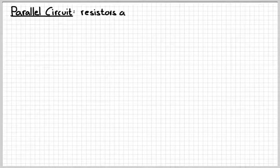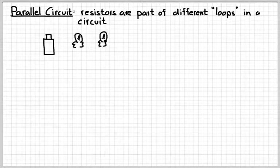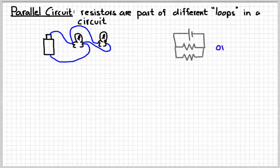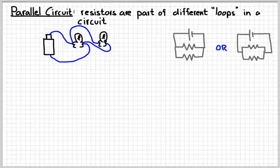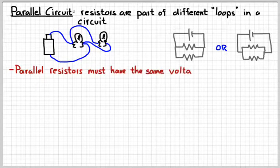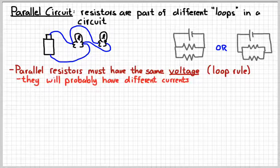Now the other way to add resistors into a circuit together is to make a parallel circuit. In a parallel circuit, resistors are parts of different loops of current in the circuit. So if we take our same two light bulbs but we connect one directly to the battery and the second directly to the battery, then we've made a parallel circuit. Two different ways we might represent that in a circuit diagram look something like that. When you add resistors in parallel, they have to have the same voltage, which is again a consequence of Kirchhoff's loop rule.